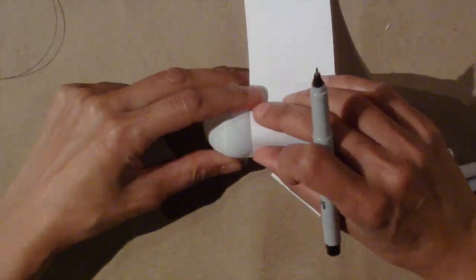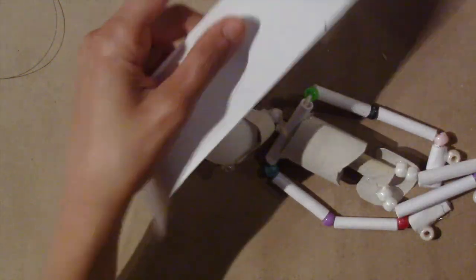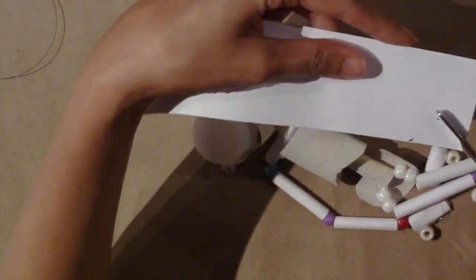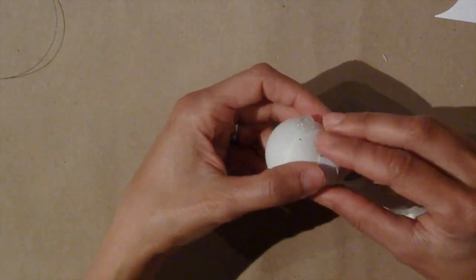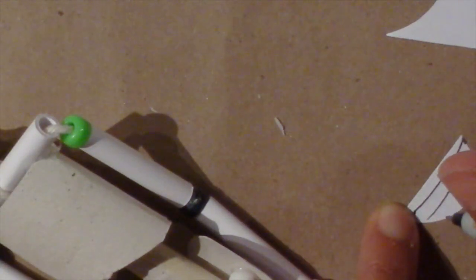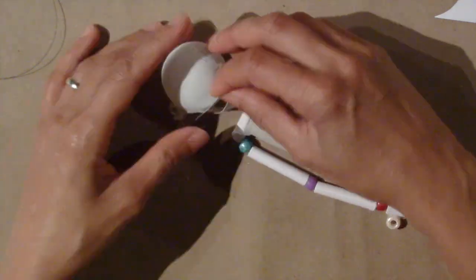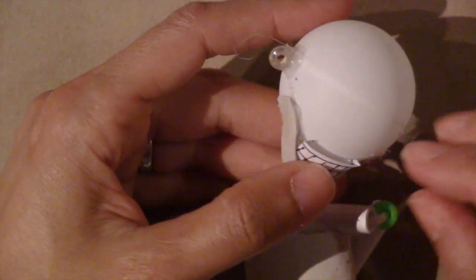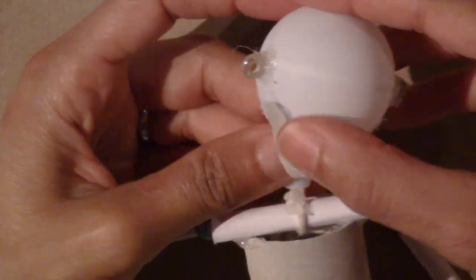It's a good idea to add any final details before adding the strings. I'm adding the teeth by drawing them onto a piece of paper, then gluing the paper into the space behind the jawbone. It was a little tricky to get the paper in there just right. Next time I might just draw the teeth directly onto the ball.